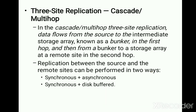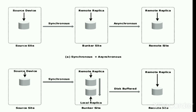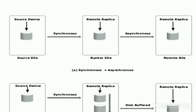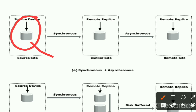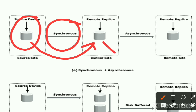The replication moves from one disk to another disk. Two modes are applied: one can be synchronous and asynchronous, or synchronous along with disk-buffered. In the synchronous and asynchronous cascade, we have three hops — the source, the bunker in between, and the remote site. Data is replicated from the source to the bunker in synchronous mode, and from the bunker to the remote in asynchronous mode.